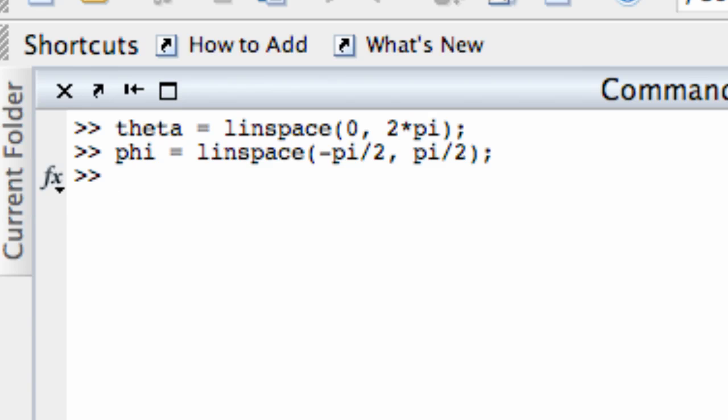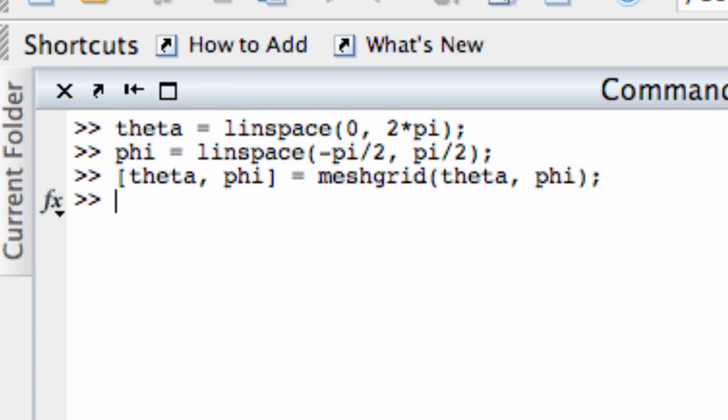All righty. Now I need to create a mesh grid because I'm going to do a 3D plot of this. Oops, messed up. I need to put square bracket theta comma phi equals mesh grid. Parenthesis theta phi semicolon. And now I'm going to define rho. Now rho is a constant function, so it's just rho equals 2. It has nothing to do with theta or phi at all. So rho is actually just a scalar, just a number here. And that's okay.